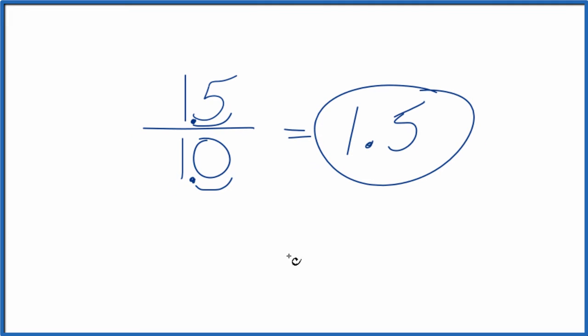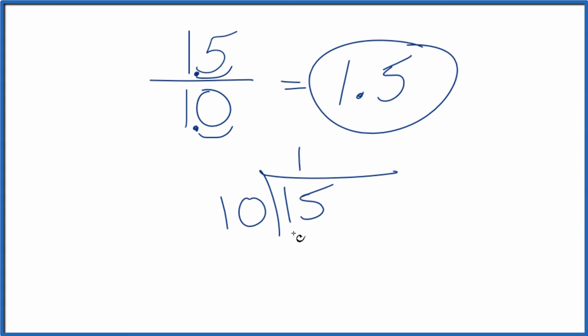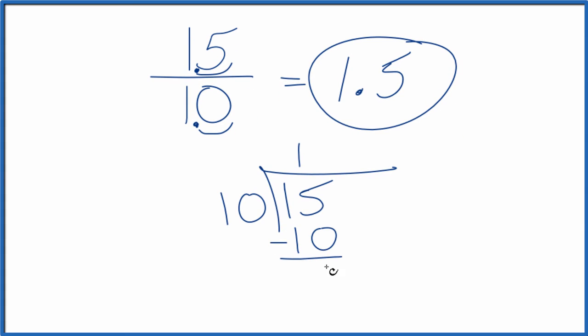Finally, you could take 15 and see how many times 10 went into 15. So 10 goes into 15 one time. 1 times 10 gives us 10. Subtract, and we have 5, but 10 doesn't go into 5.